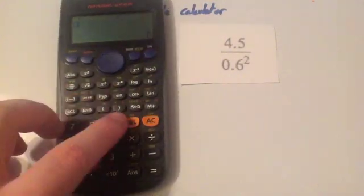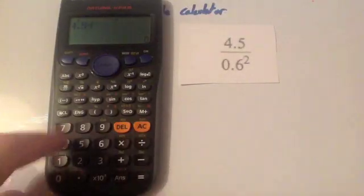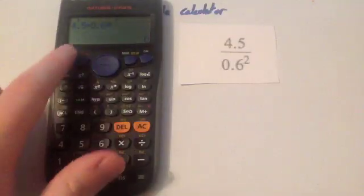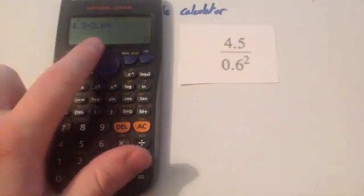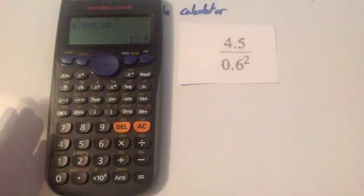So these are a couple of exam questions here. So first one, 4.5 divided by 0.6 squared. So if I was doing that personally, I would do 4.5 divided by 0.6 and then squared. So you've got 4.5 divided by 0.6 squared. And press equals. And that would be your answer. 12.5.